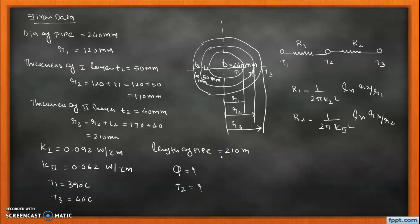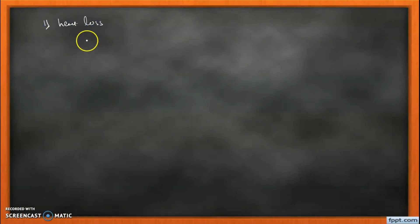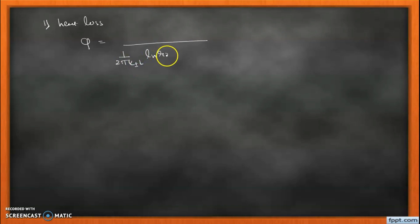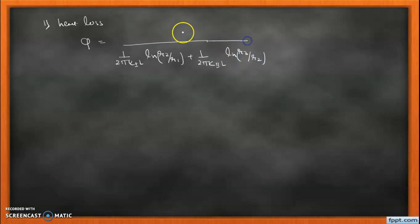Starting with the heat loss calculation, we apply: Q = (T1 − T3) / (R1 + R2), where R1 = (1 / 2πk1L) · ln(r2/r1) and R2 = (1 / 2πk2L) · ln(r3/r2). Substituting the temperature difference: T1 − T3 = 390 − 40.